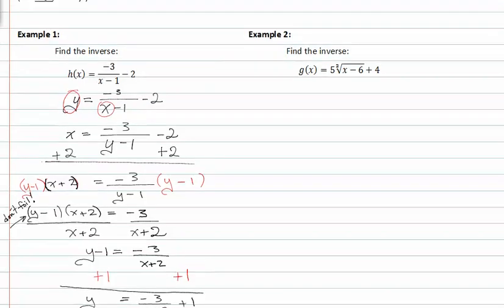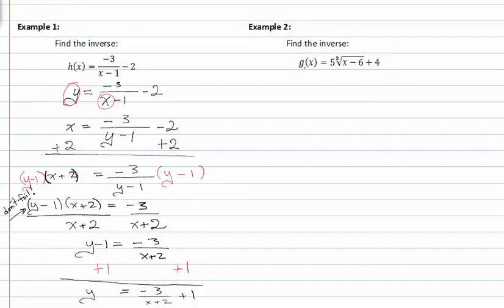Let's look at example two. We need to find the inverse of g of x, so I'm going to rewrite g of x as y is equal to five cubed root of x minus six plus four.